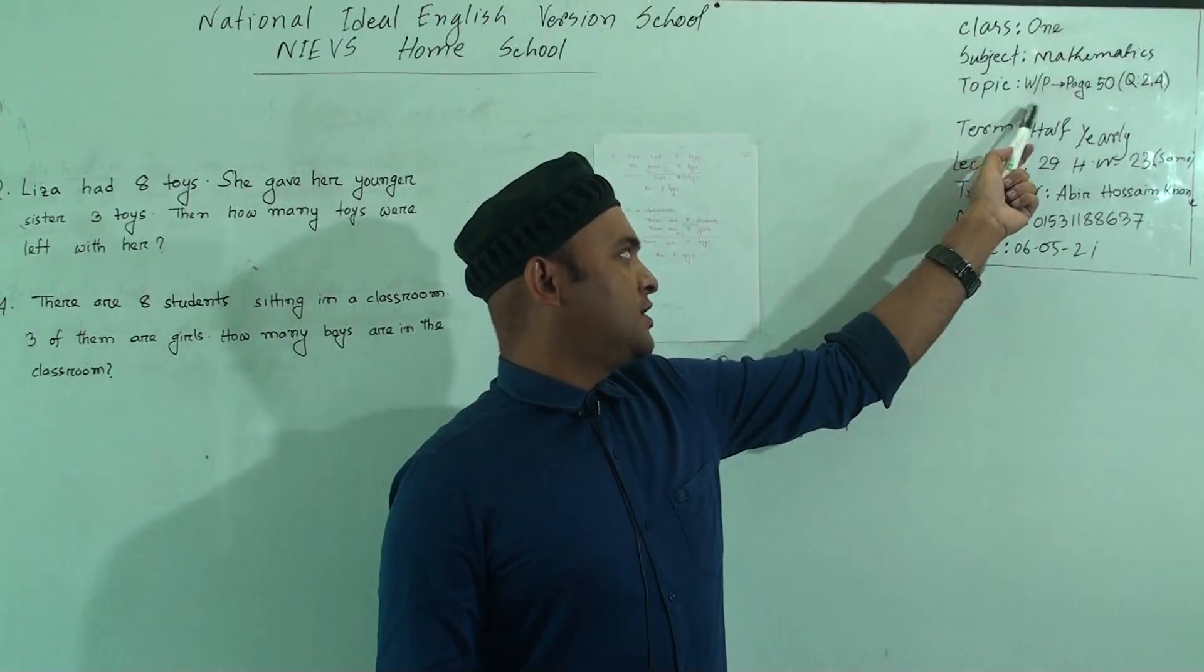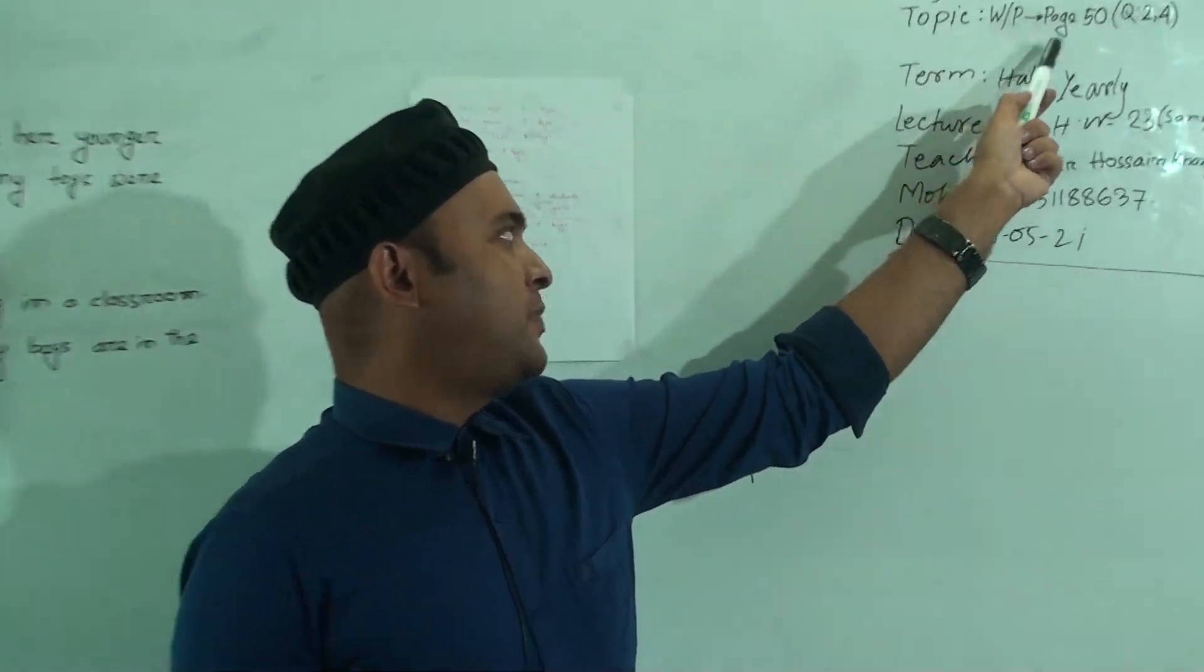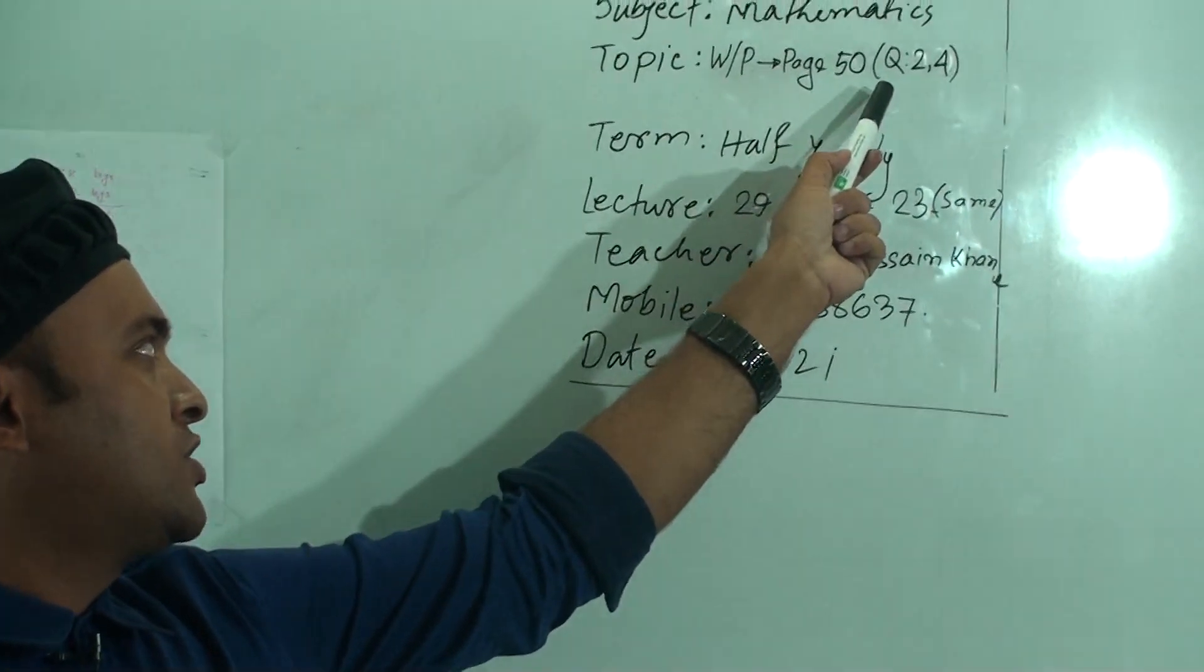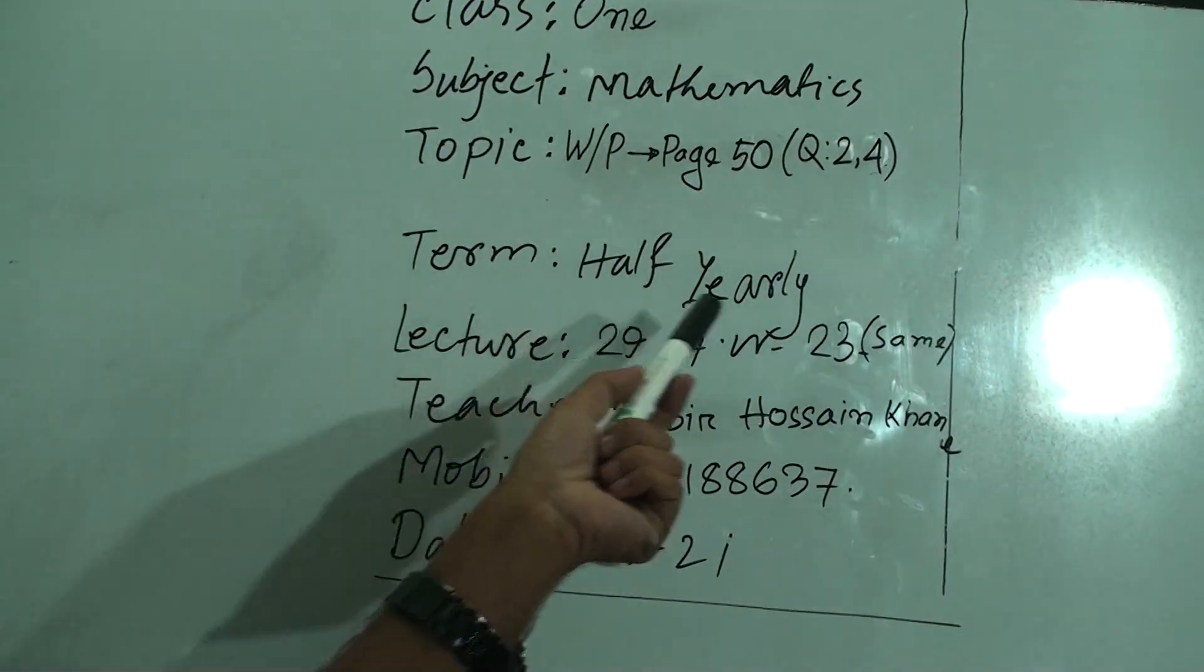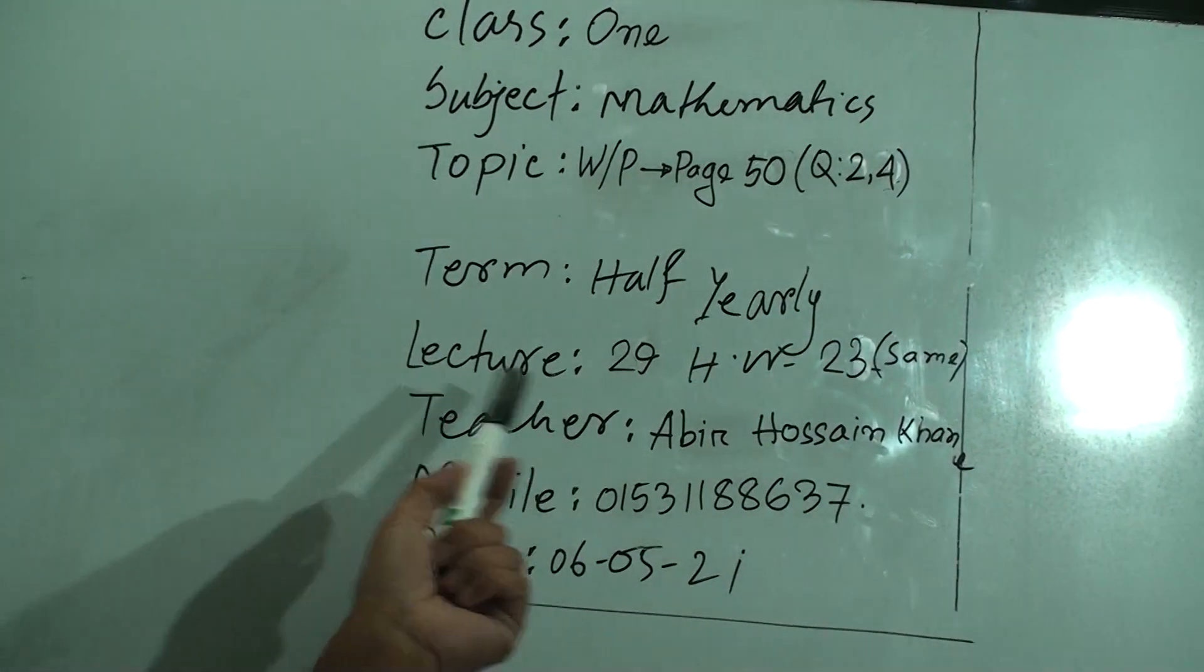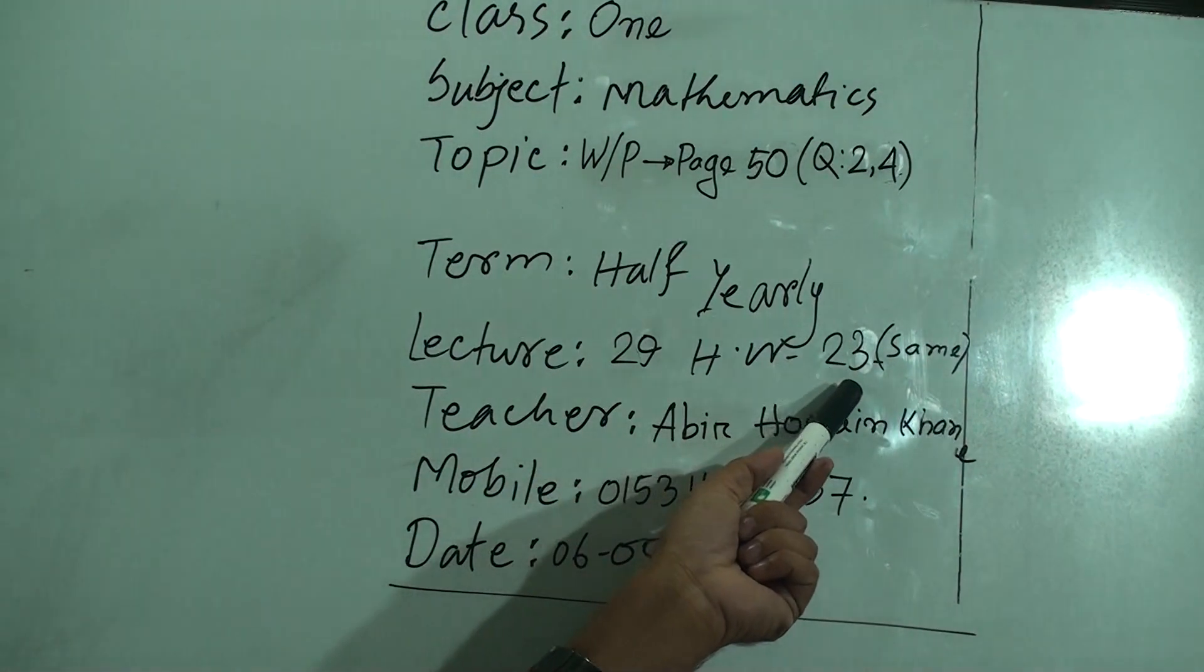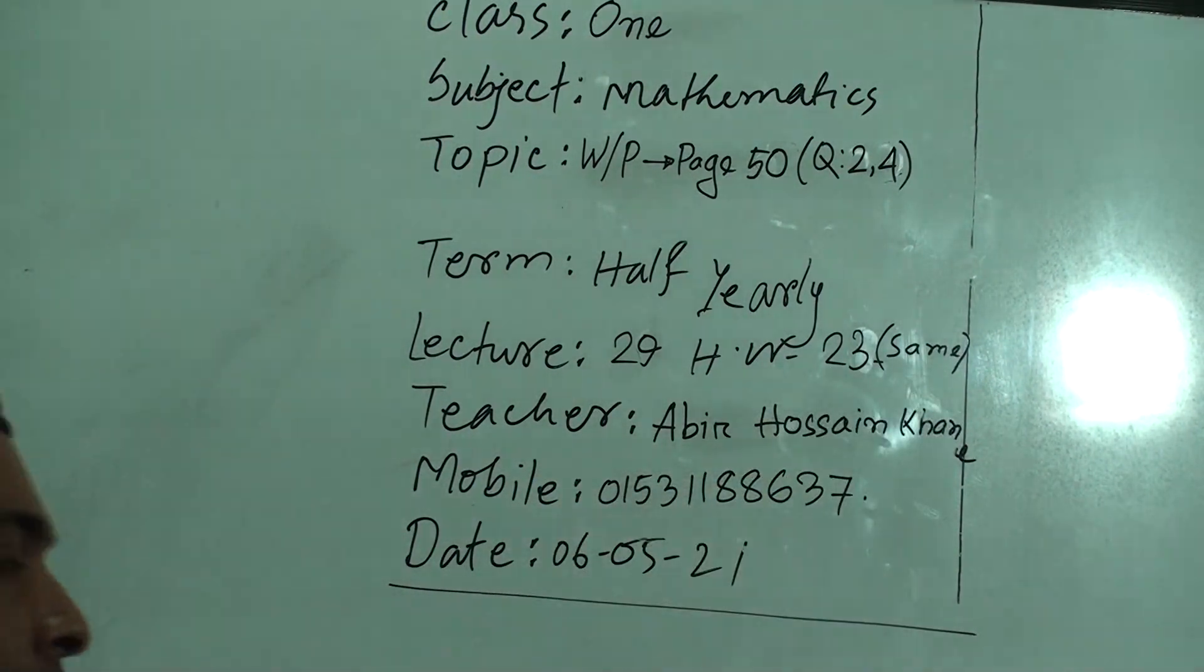Today I'm going to take a mathematics class for Class One. Our today's topic is word problems at page 50, and our question numbers are 2 and 4, which are included in the syllabus of the half-yearly lecture. Our today's lecture is 29 and homework is 23. Now let's start our class.